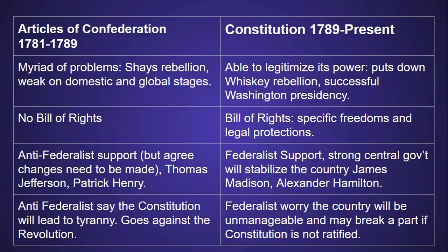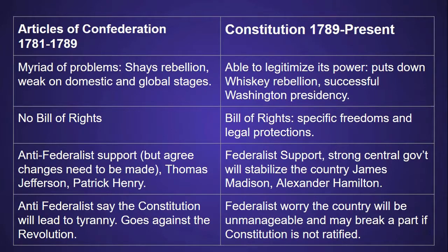A few more comparisons to cover. The government under the Articles had a hard time accomplishing anything, even the ability to put down small local rebellions like Shays' Rebellion. There was no chance of other great powers ever taking the U.S. seriously. This changed under the Constitution. The government was able to legitimize its power when farmers in western Pennsylvania openly defied the whiskey tax and started a rebellion. Washington and his secretary of the treasury, Alexander Hamilton, successfully put down the rebellion.